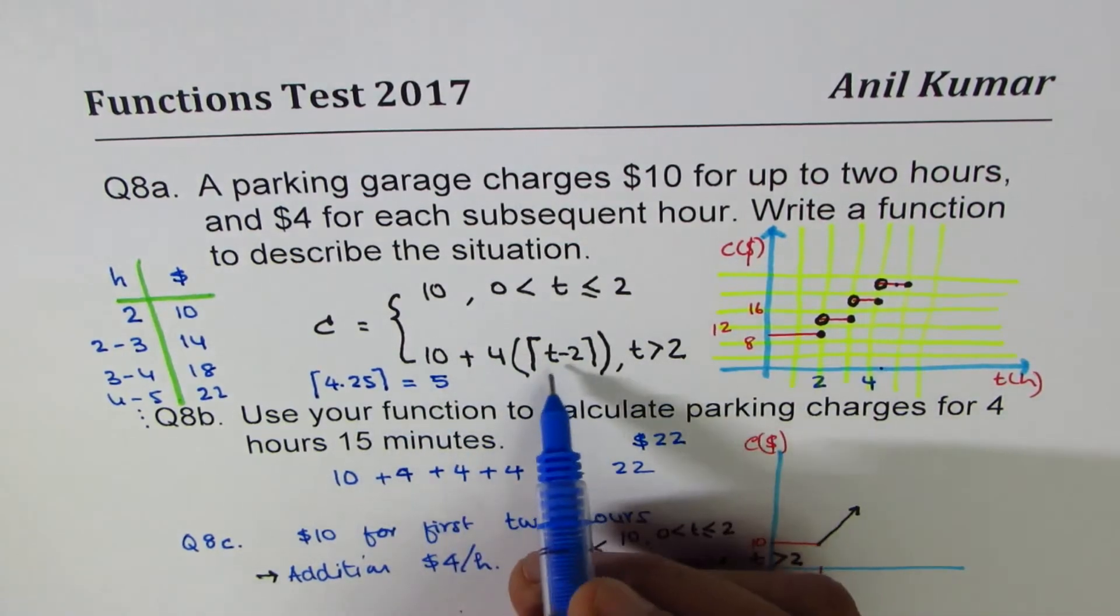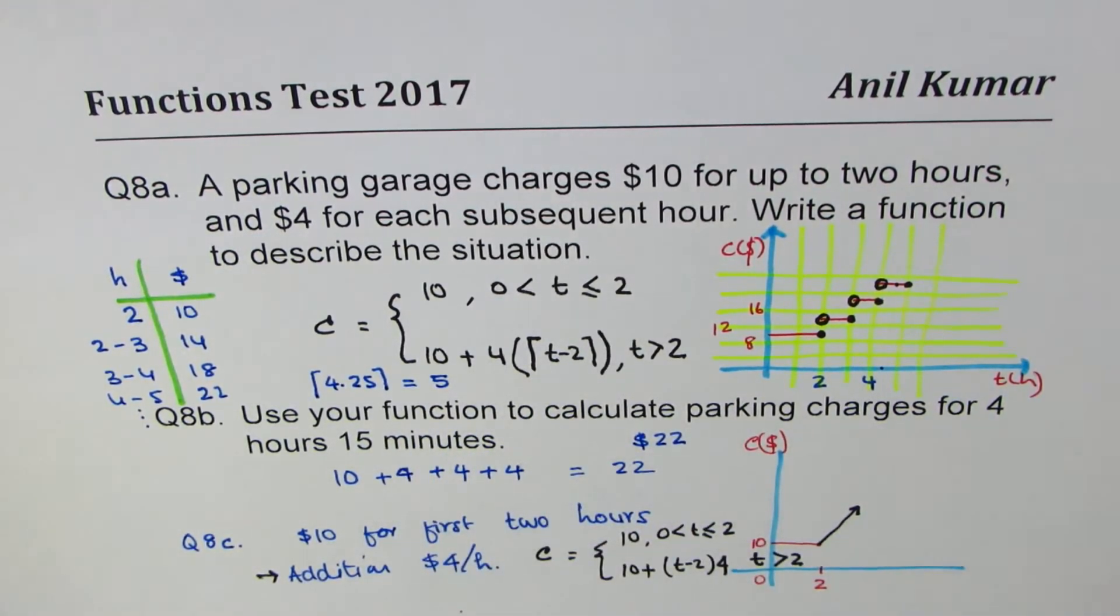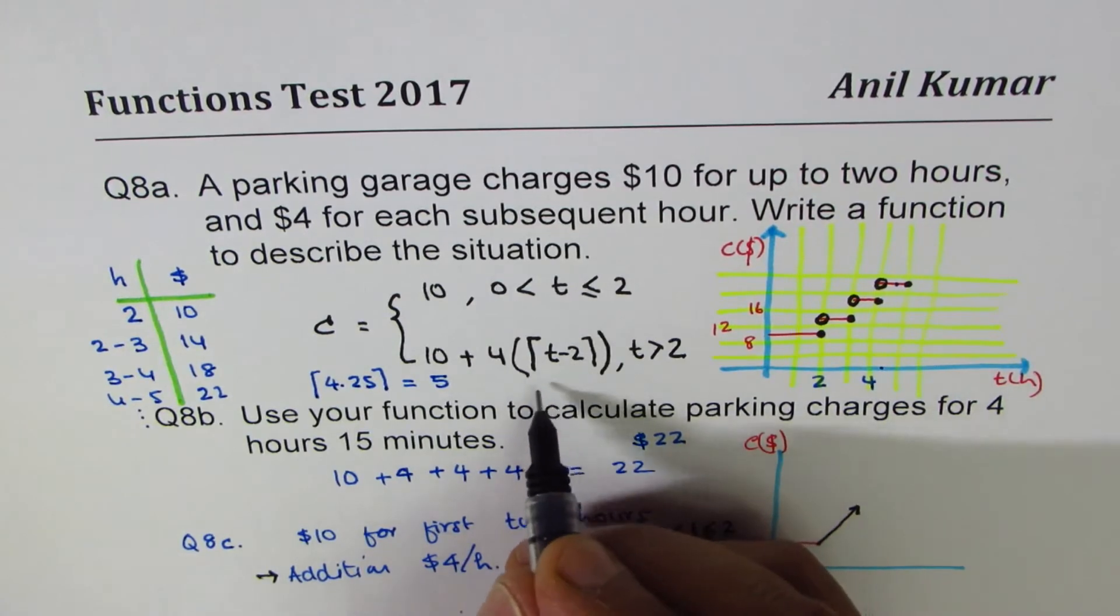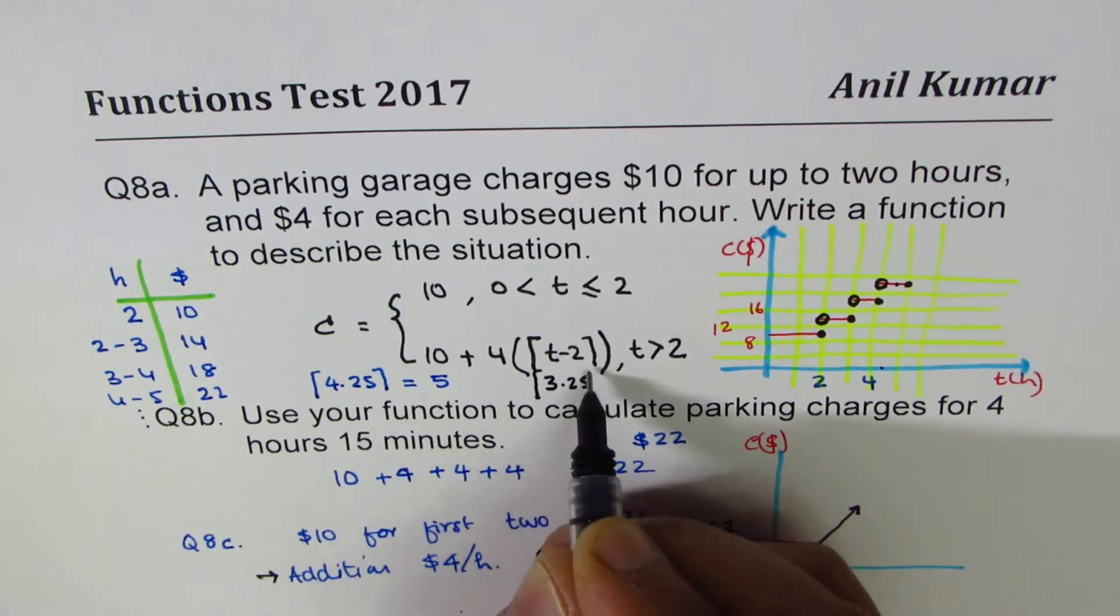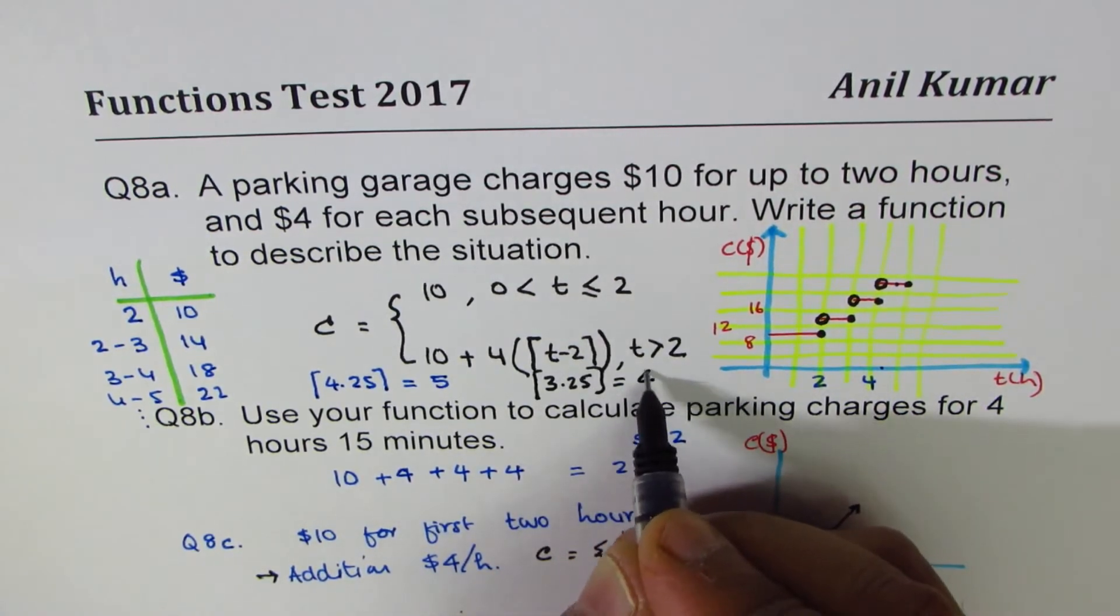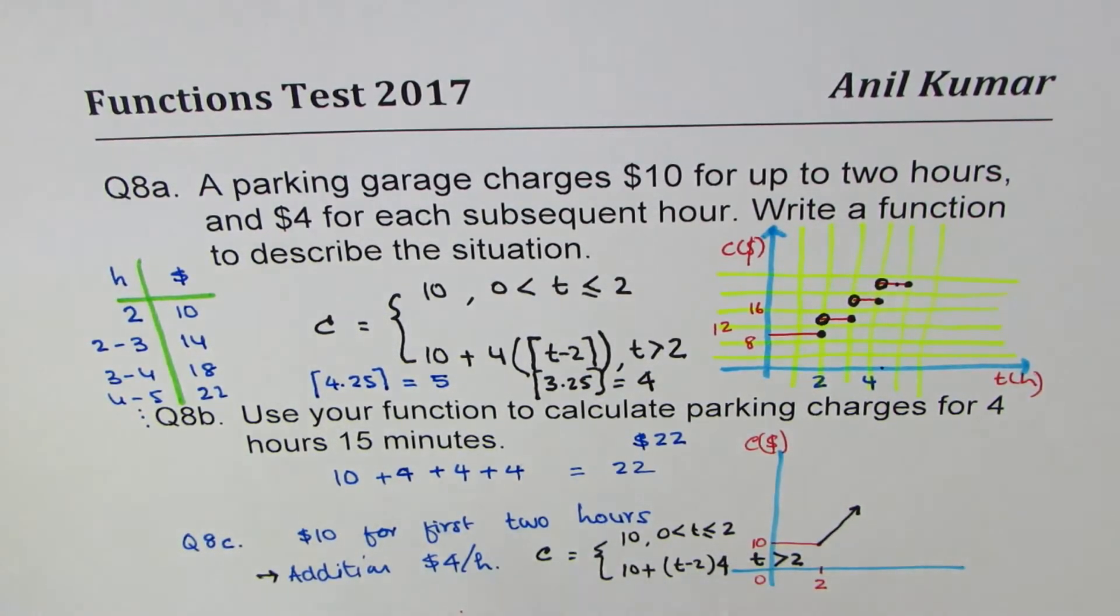So in this case, here, when we substitute 4.25, it is 4.25 minus 2. So let's do this. And 4.25 minus 2 is 2.25. So 2.25 ceiling function will be equals to 3.